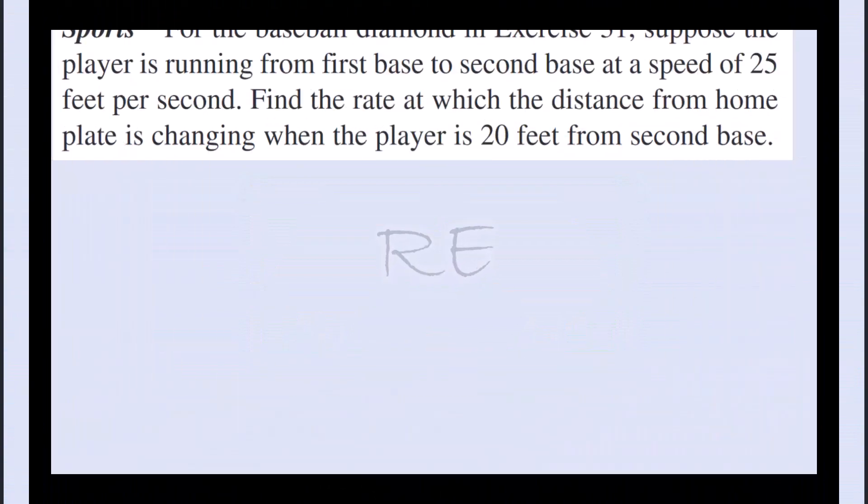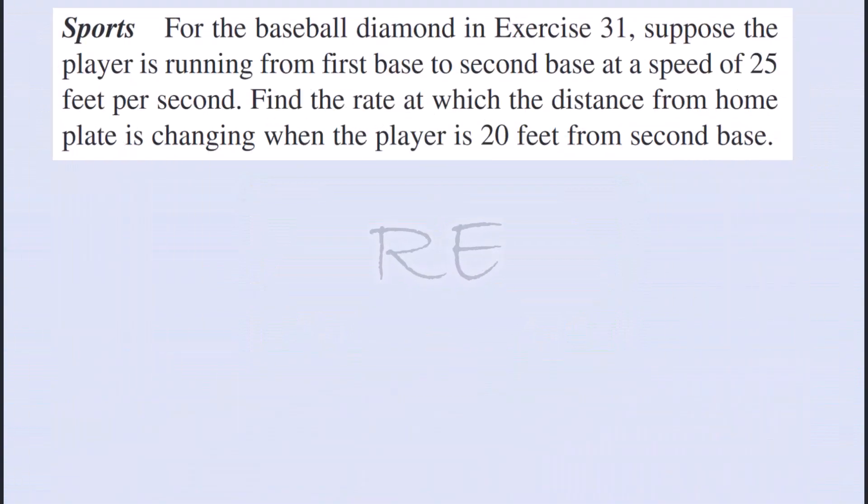The baseball diamond is a rhombus. All sides are congruent and measure 90 feet, and the vertices are right angles measuring 90 degrees. The player is running from first base to second base at a speed